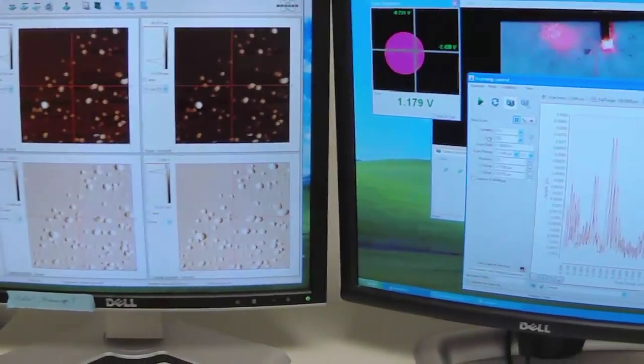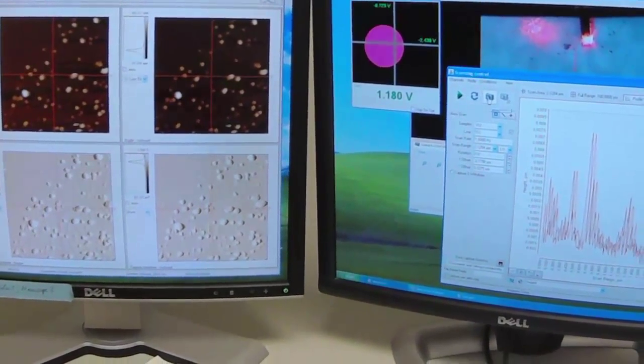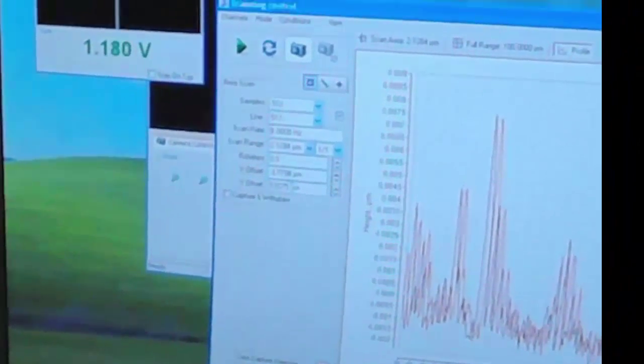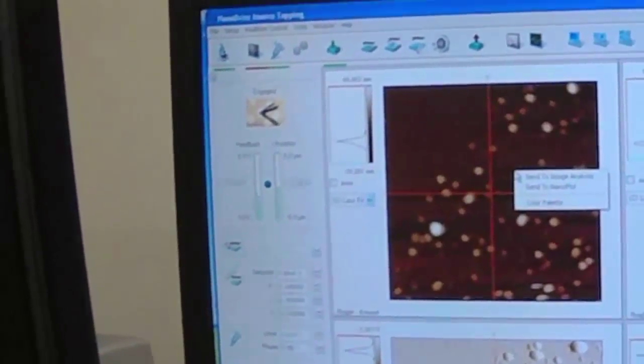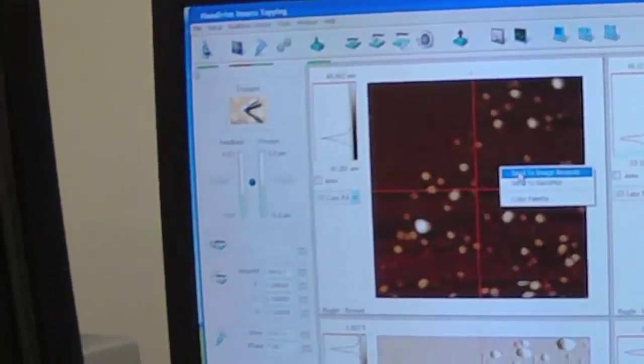There's two ways to do that. One way is to save the file to the data folder using the camera button here. Another way, we can right-click and it says Send to Image Analysis.